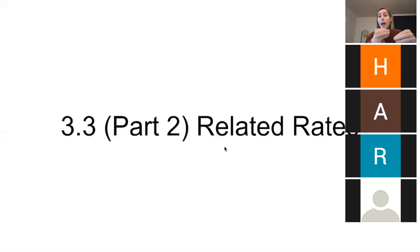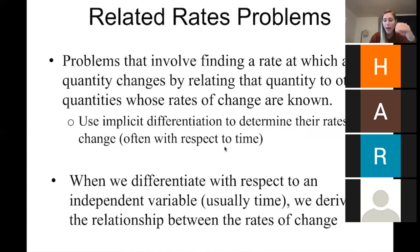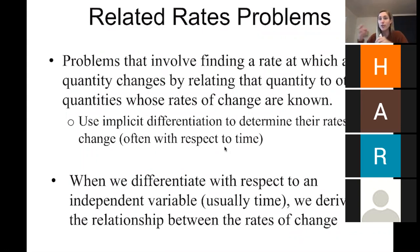Those different quantities, as time is passing, are related to each other, and their rates of change as time is passing are also related. So related rates problems are problems that involve finding a rate at which a quantity changes by relating the quantity to other quantities whose rates of change are known. Basically, for related rates problems you're given the rate at which one quantity is changing with respect to time.